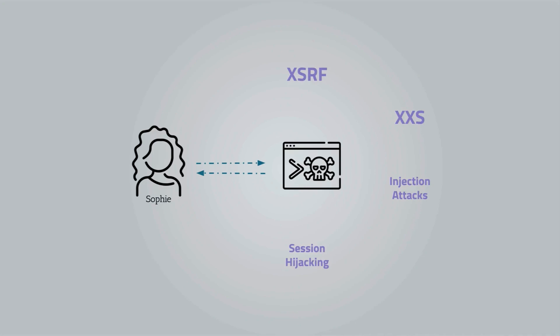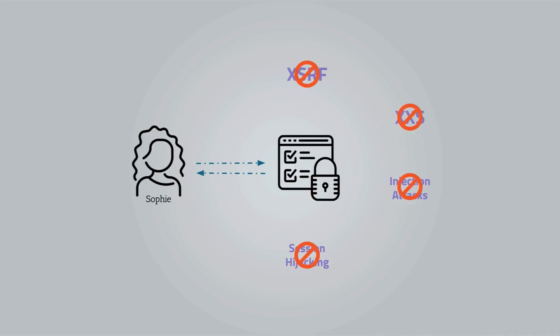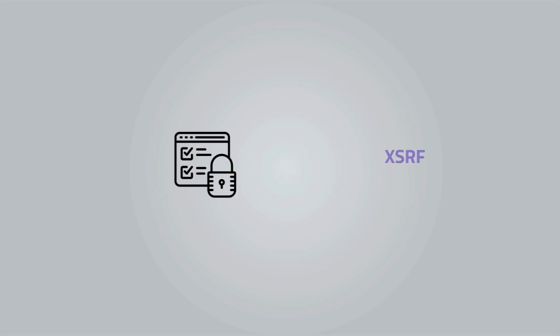Luckily for us, browsers are aware of such practices and have security measures for that. And just to let you know, that is not enough — the developer should also do his part to secure his website. One famous mechanism by which browsers prevent these types of attacks is called Same Origin Policy, or SOP for short.